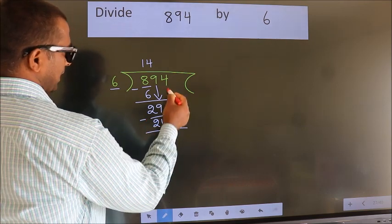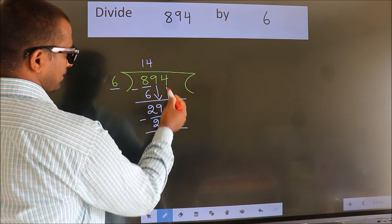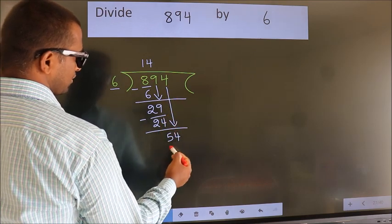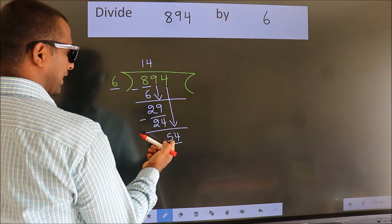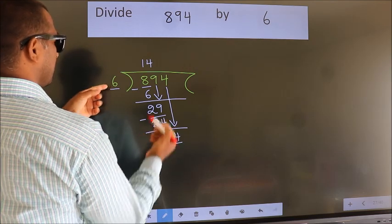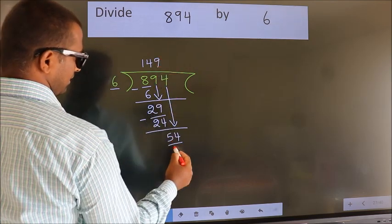After this, bring down the beside number. So, 4 down. So, 54. When do we get 54 in 6 table? 6 times 9 is 54.